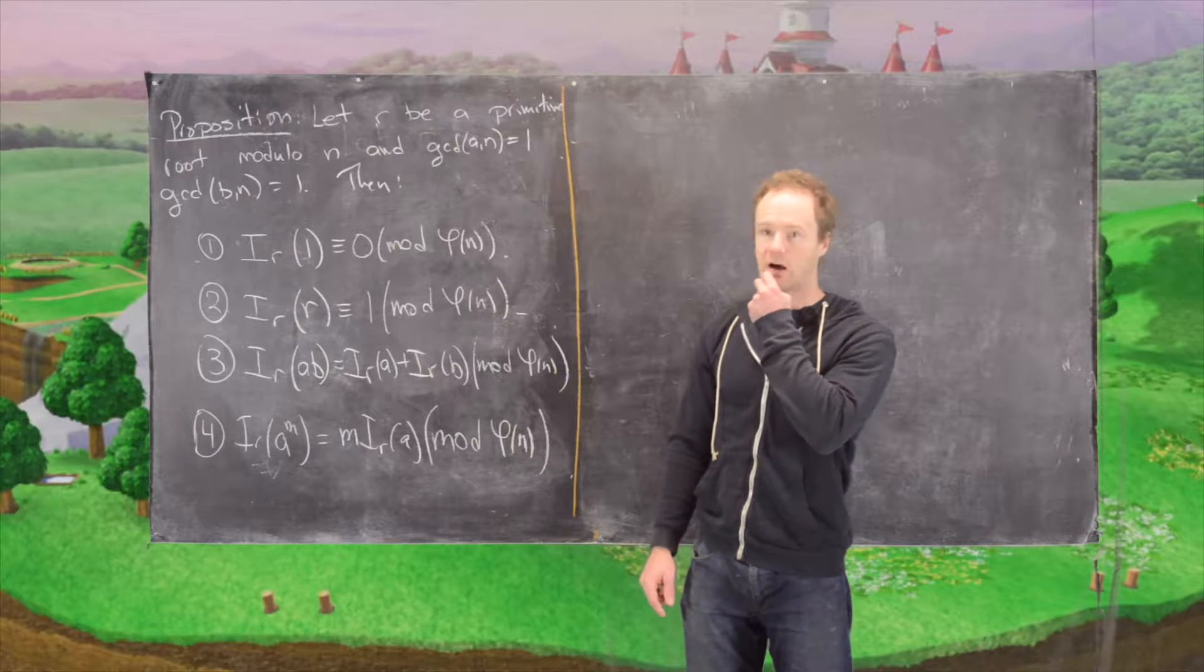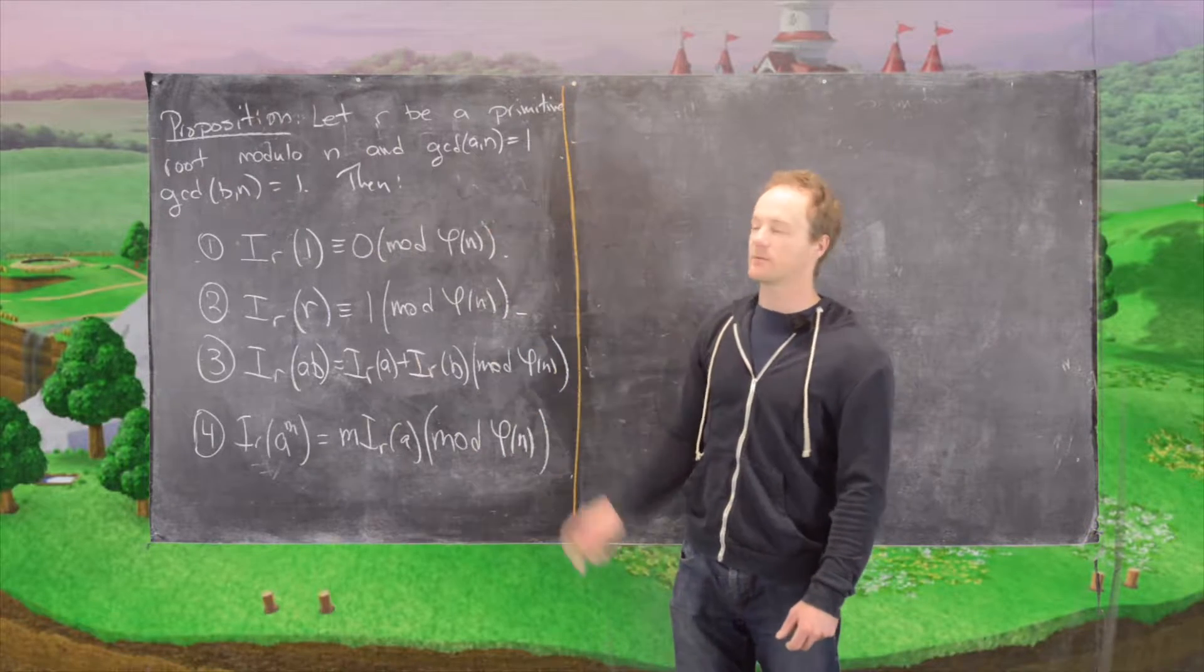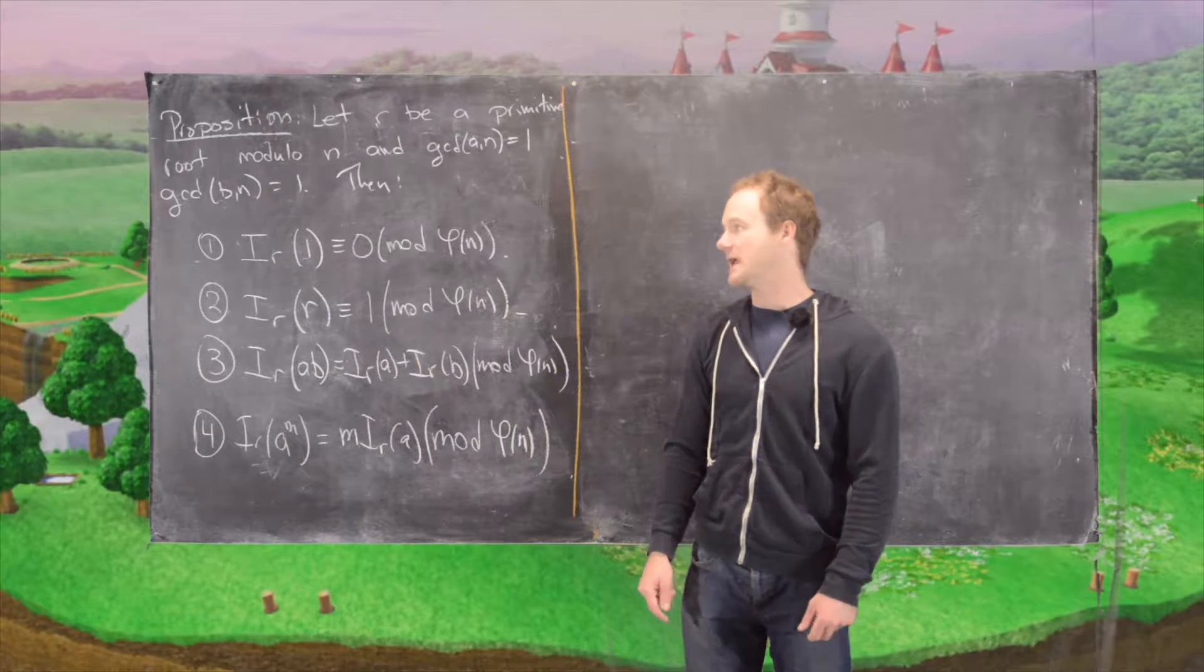So let r be a primitive root mod n, and then we have two numbers that are relatively prime to n, a and b.